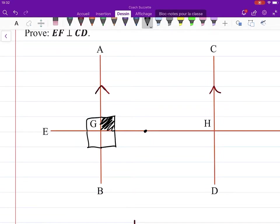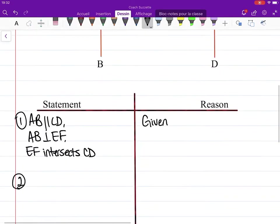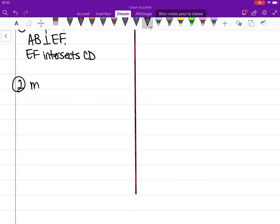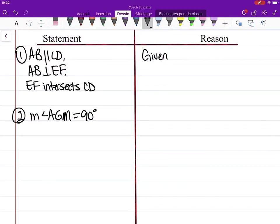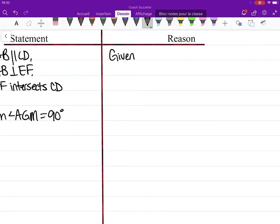This angle, so that would be AG. Another letter M. Measure of angle AGM is 90 degrees. How do we know? Because perpendicular lines form right angles.